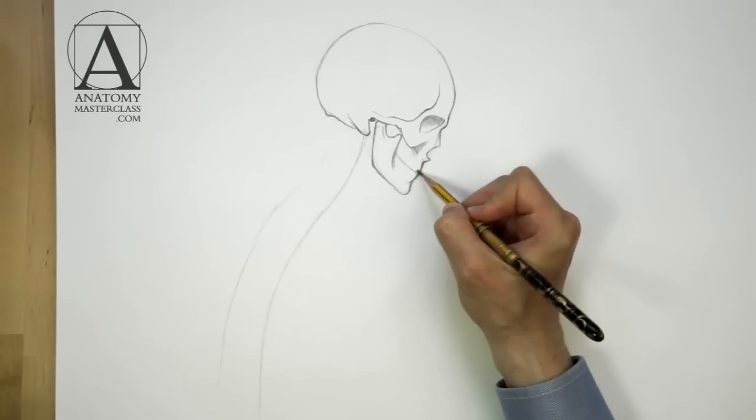Right behind the air channel, there is the bony process on the base of the skull. This is the place where the neck muscles attach to the skull.